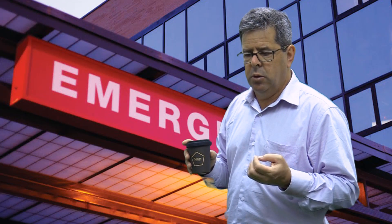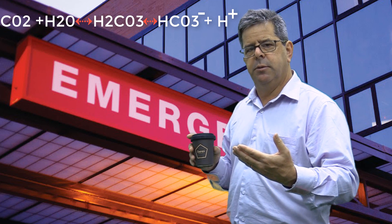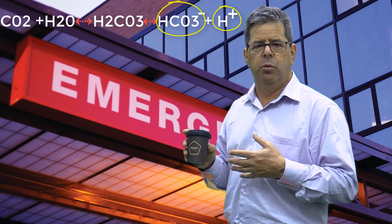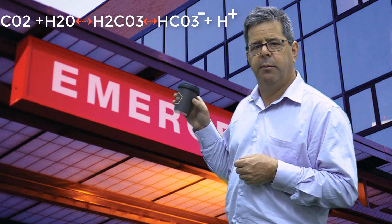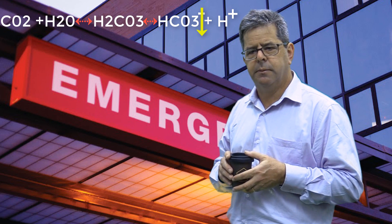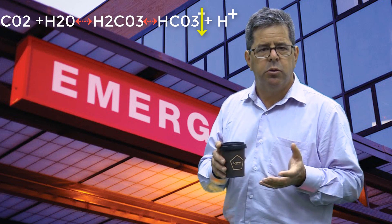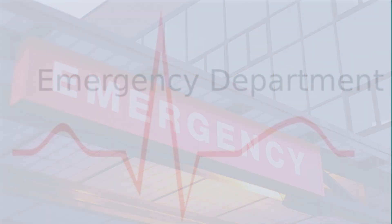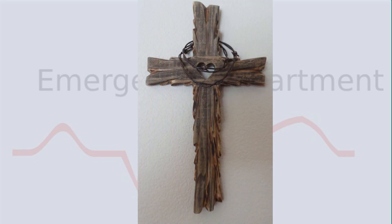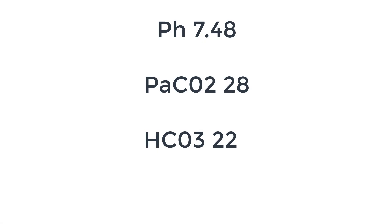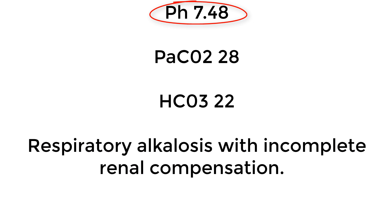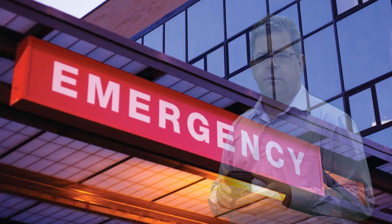To compensate for respiratory alkalosis, the body tries to produce more CO2 — H+ and bicarbonate bind together and bicarbonate starts to drop. Example: a 25-year-old lady presents in distress after the death of a friend. She's alkalotic, CO2 is down, bicarbonate is down as it's being used up. The compensation is partial because the pH still hasn't returned to normal — respiratory alkalosis with incomplete compensation.